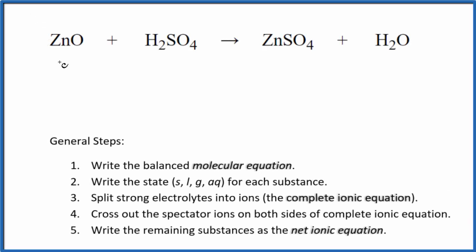In this video, we'll write the net ionic equation for ZnO plus H2SO4. This is zinc oxide and this is sulfuric acid. So the first thing we need to do with net ionic equations, we need to balance the molecular equation.